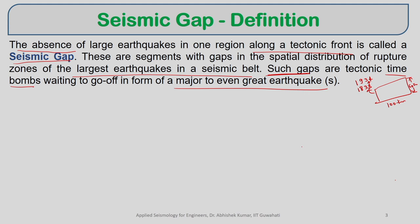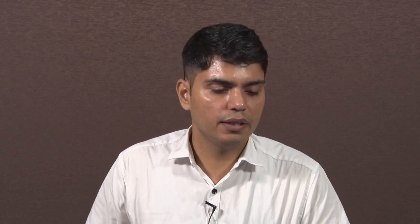Whenever we refer to seismic gaps, we are interested in locations due for major to great earthquakes, because the damage from major to great earthquakes will be significantly larger compared to small earthquakes. Seismic gaps are the sections of unruptured faults; some segments have undergone rupture or earthquakes, but some segments remain unruptured during a prolonged duration, and those are called spatially identified zones of seismic gaps.